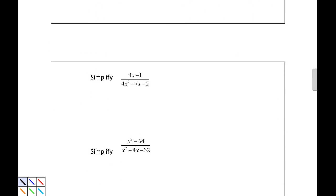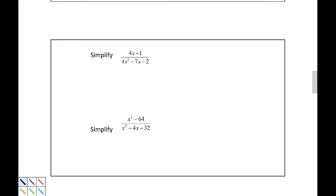Now let's take a look at these two examples. Simplify. Our numerator is 4x plus 1, and our denominator is 4x squared minus 7x minus 2. Now I need to factor our denominator. Numerator is linear, it's not going to factor.